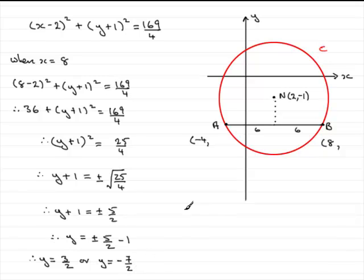Now we're after the coordinates of A and B and clearly the y values are below the x-axis. So y must be a negative number, y must be less than 0. So what I'm going to put over here then is that since y must be less than 0 then clearly y has to equal minus 7 over 2.